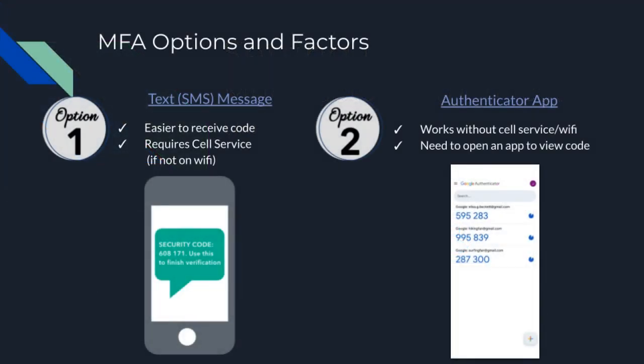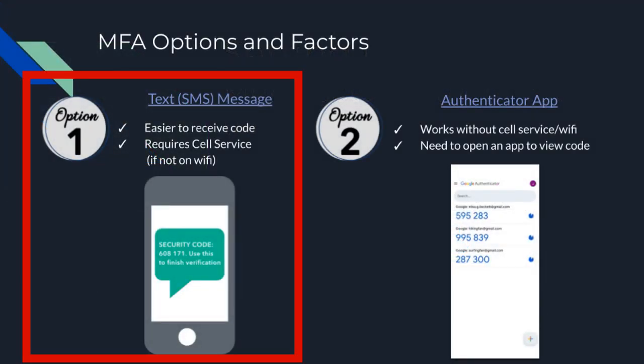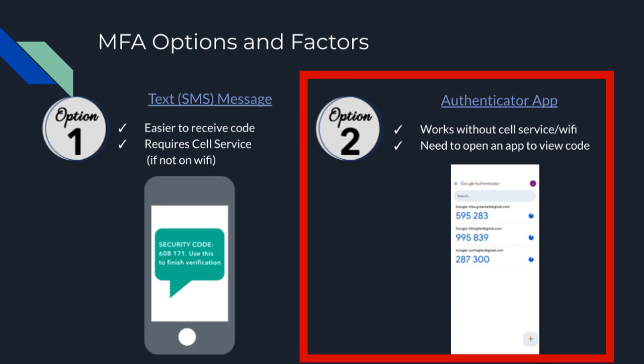When setting up MFA, there are two options. The first option is the text message option — with this method, you will receive a code on your cell phone that you will have to enter when signing on to ClassLink. The second option uses an authenticator app, which is a great option if you are in an area where you don't have good cell service or Wi-Fi access.